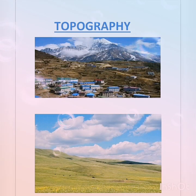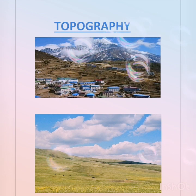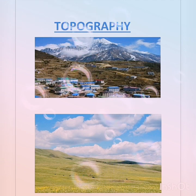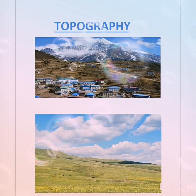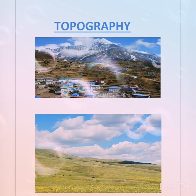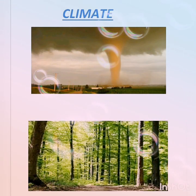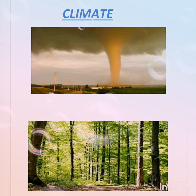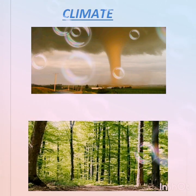Topography: plains are densely populated rather than mountainous regions because it is easier to construct houses and grow crops on plains. That is why the Ganga plains in India are densely populated, while the mountainous regions of the Alps, Andes, and Himalayas are sparsely populated. Climate: regions experiencing extreme climatic conditions tend to be sparsely populated, as people settle where climatic conditions are moderate and there is sufficient rainfall.